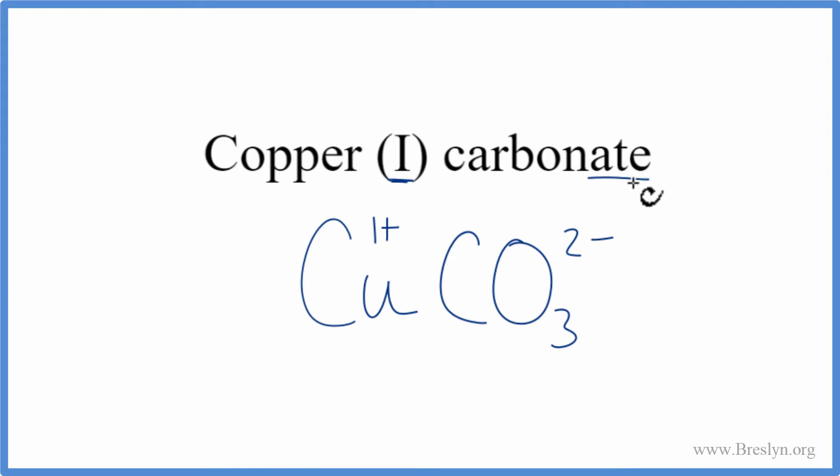Copper one carbonate is a neutral compound. We'll use something called the crisscross method to do that. We can move the two here, and the one here. We don't actually write the one by convention. Get rid of the charges, and this is the formula for copper one carbonate.